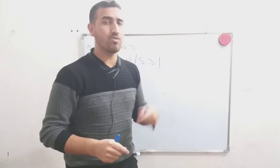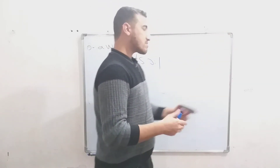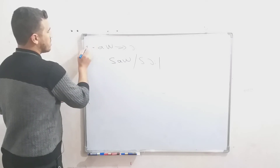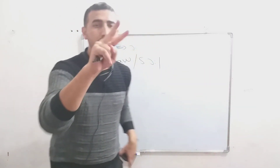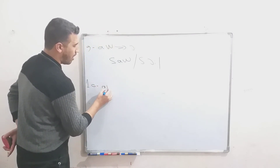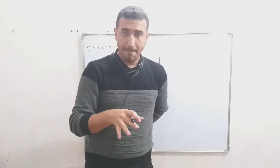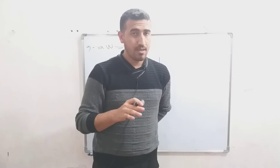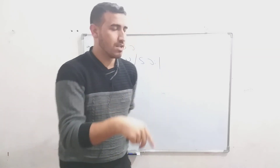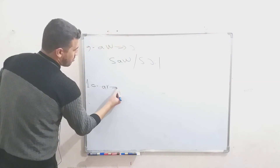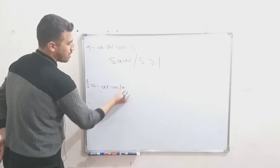Rule number ten is also very common. We have two letters: A and R. Pay attention — when these two letters appear in the middle of a word, not at the end but in the middle, in transcription they are written in the way shown here.